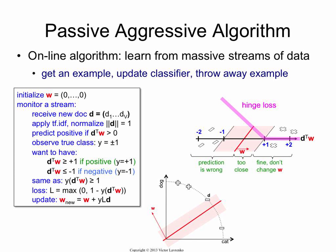A new document comes in, it's negative. So what happens in this case? It's on the wrong side of the boundary, so I'm going to have a massive penalty. In fact, it looks like it's scoring a plus 1 and it should be getting a minus 1. So it's going to be a big change. L is going to be 2.